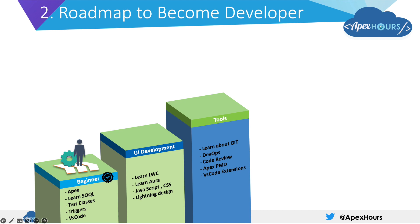Once you know the UI development part, then do some work on the tooling side so you become more expert-level. Learn about Git, DevOps, code review, Apex PMD, and VS Code extensions. Once you are done with all of this, you are ready to do a development job.